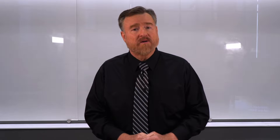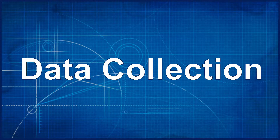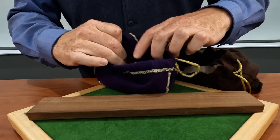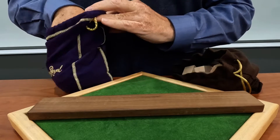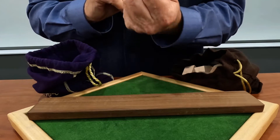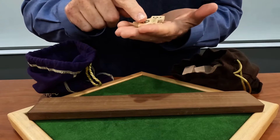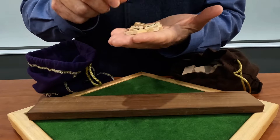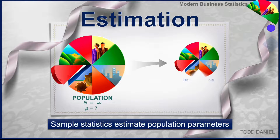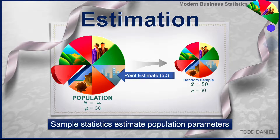Let's begin with some things that you already know, and then we can ease our way into our discussion. You may recall in our last lecture that we collected data. To illustrate this, I used a bag of numbers — I reached into that bag and pulled out numbers that represent data. Each of those data points can be combined and turned into an average, and we now have an average of that sample. That sample average will become a point estimate.